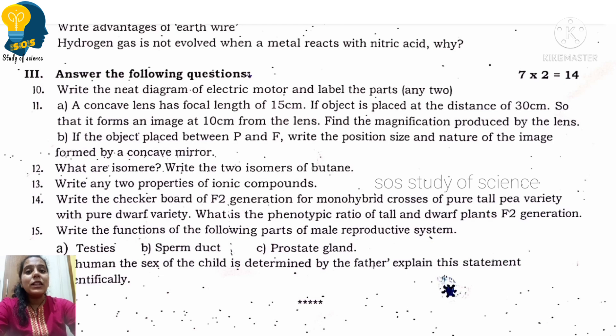Moving to 12th question. What are isomers? Very easy question from carbon and its compounds. Isomers are the compounds which have the same molecular formula but different structural formula. Write two isomers of butane. So you can write butane and isobutane structures. Butane with 4 carbon atoms which have straight chain, and isobutane which have 4 carbons with branched chain.